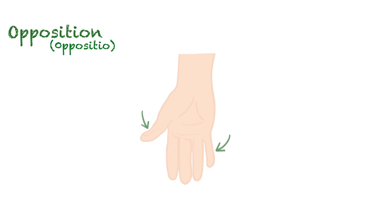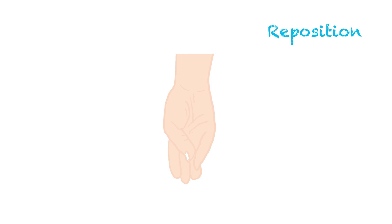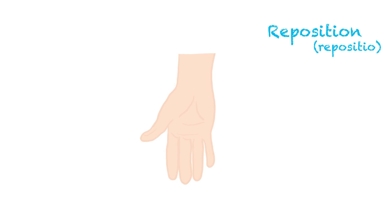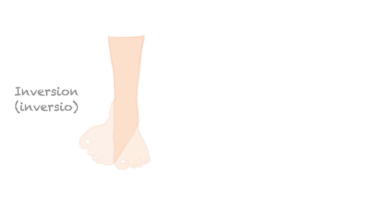Opposition — it is the act of joining the thumb with one of the other fingers. Movements such as fastening buttons or holding a pencil are examples of opposition. Reposition is the opposite of this movement — it is the movement of the thumb away from one of the other fingers, returning to the normal anatomical position. Inversion — the term inversion means turning inward in Latin. It refers to the rotation of the sole of the foot towards the median plane, with one sole turning toward the other side. Eversion, on the other hand, is the opposite of inversion — it is the outward rotation of the sole of the foot away from the median plane.